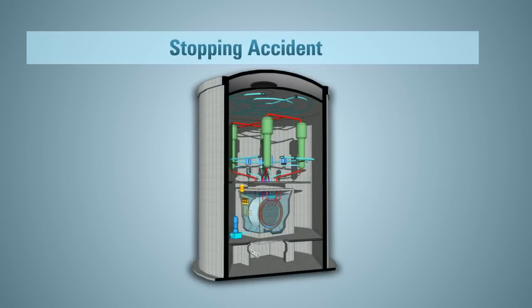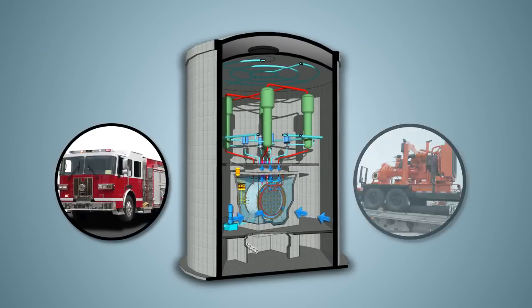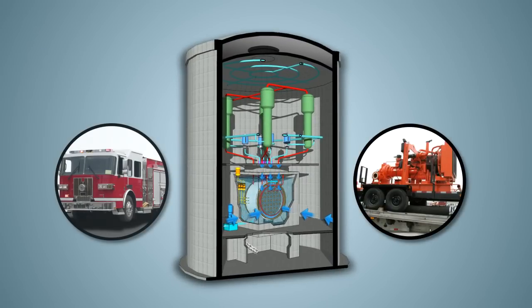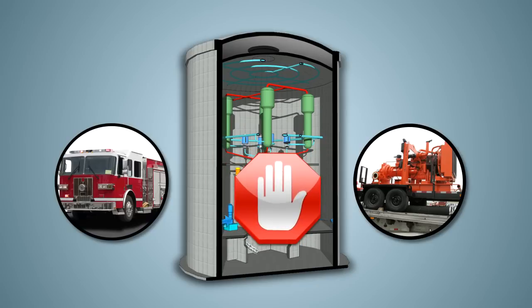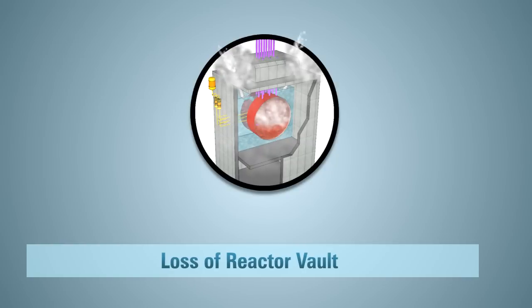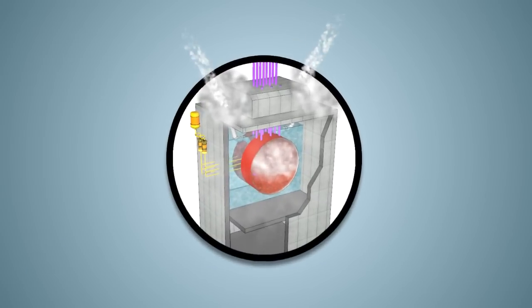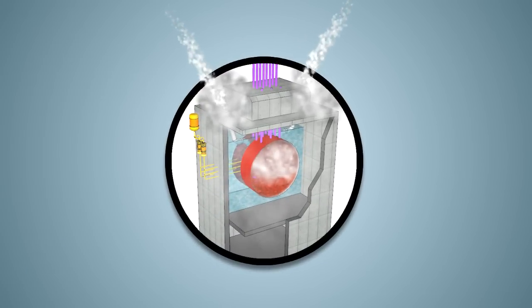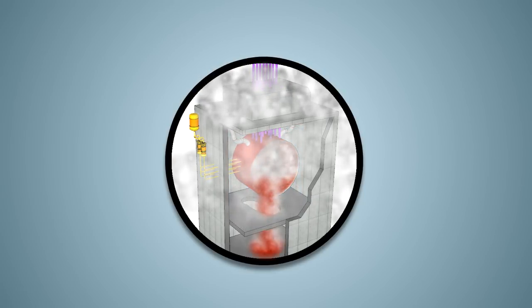Once again, supplying water to the Calandria and vault using emergency equipment such as fire trucks would stop the accident. Assuming the accident is not stopped, all remaining water in the reactor vault would evaporate and the reactor fuel would melt onto a thick concrete slab.